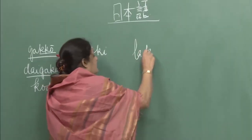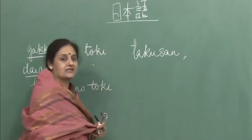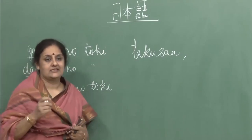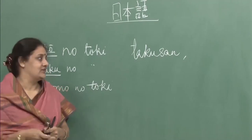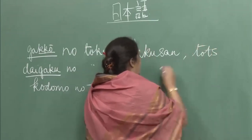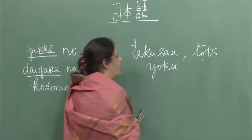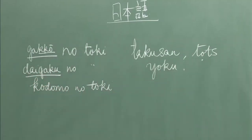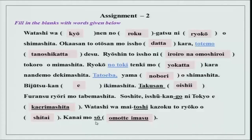Then you have tatoeba, which means 'for example' — we have done that before. Then takusan means a quantity that can be counted or measured — lots. Yoku also means lots, but yoku cannot be counted or measured; it is a degree of something. Kaerimashita — as I mentioned, modorimasu can also be used. Maitoshi means every year.